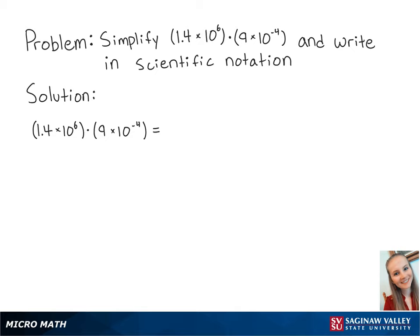First, we're going to rearrange the numbers in similar groups. So we're going to group 1.4 and 9 together, and 10 to the 6 and 10 to the negative 4th together. So this is equal to 1.4 times 9 times 10 to the 6 times 10 to the negative 4th.